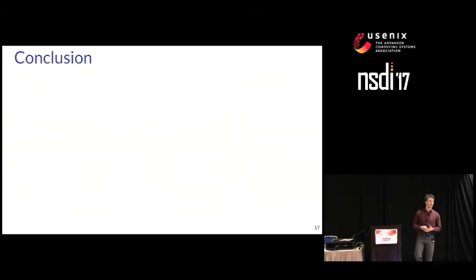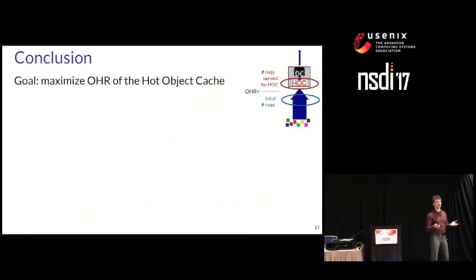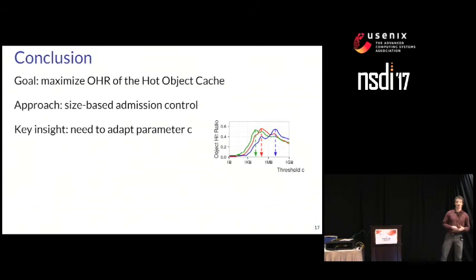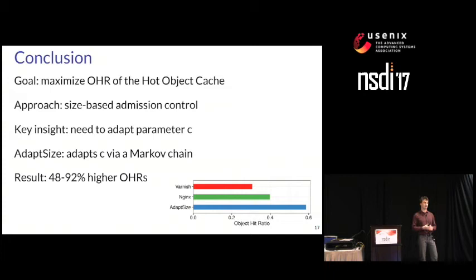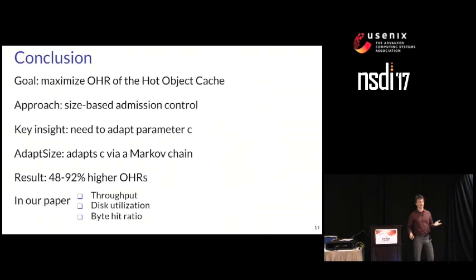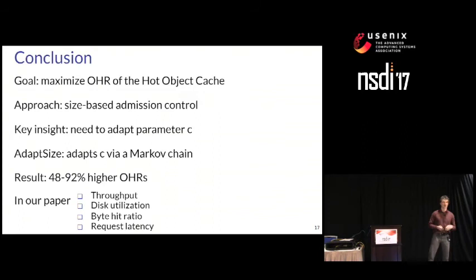To sum up: we set out to maximize the object hit ratio of the hot object cache — defined as the fraction of requests served by the HAWC. Our approach was size-based admission, and our key insight was that we need to adapt the parameter C over time. AdaptSize uses a Markov model to adapt C, resulting in very significant gains in the object hit ratio. We also evaluated throughput, disk utilization, byte hit ratio, and request latency — all looking very promising. We open-sourced our system and you can find it on GitHub.